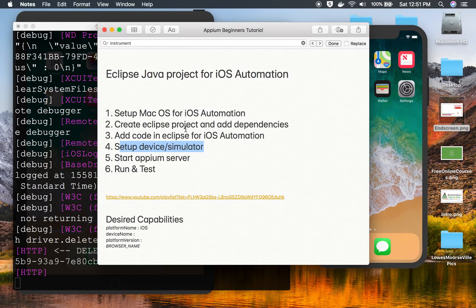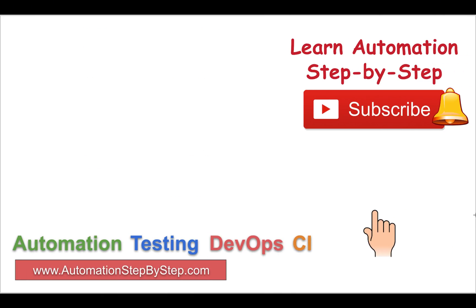This is how you can set up desired capabilities for iOS automation and run your tests on an iOS device or simulator. I hope this session was very useful for you. If you have any doubts, put them in the comment section below — but first always try to troubleshoot yourself by copying your error and searching on Google. If you still can't resolve it, let me know. I'll see you in the next session. Thank you for watching.